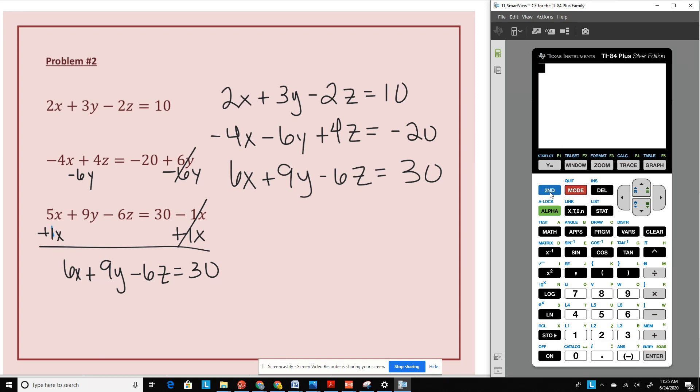We're going to go to math and do reduced row echelon form. And now we're going to select the matrix that we just saved. So second matrix. We're going to pick matrix C, which is where I saved it.